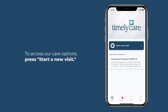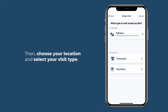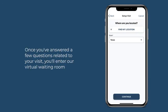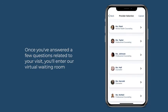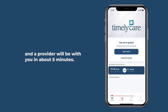To access our care options, press start a new visit. Then choose your location and select your visit type. Once you've answered a few questions, you'll enter our virtual waiting room and a provider will be with you in about 5 minutes.